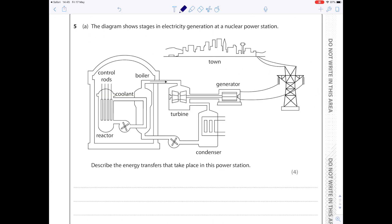Questions like this now, which everyone seems to find really difficult. The diagram shows stages in electricity generation at a nuclear power station. Describe the energy transfers that take place in this power station. So the hardest thing here is to work out where to begin, and you want to start wherever the fuel is, and that's inside the nuclear reactor.